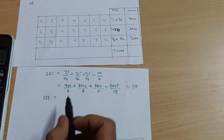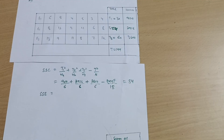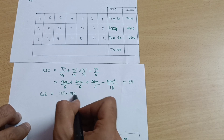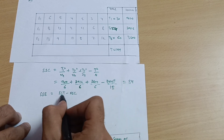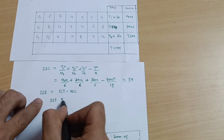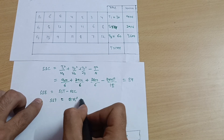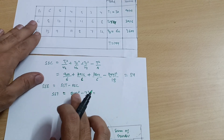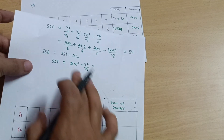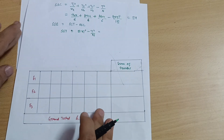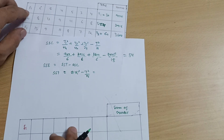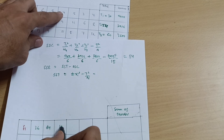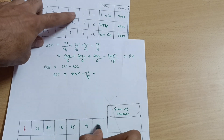Now calculate SSE, which is the sum of squares within the sample. The formula is SSE = SST − SSC. We have SSC, but we need SST. SST is calculated as: summation of xi² minus T² / n. We have not yet calculated the summation of xi², so we need to draw another table and take the squares of each individual value.